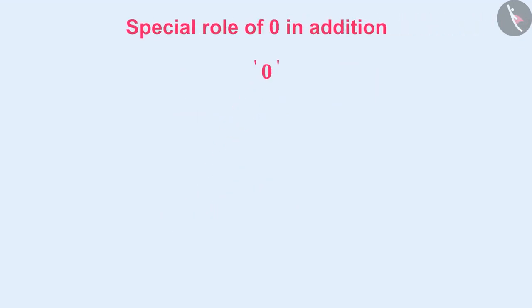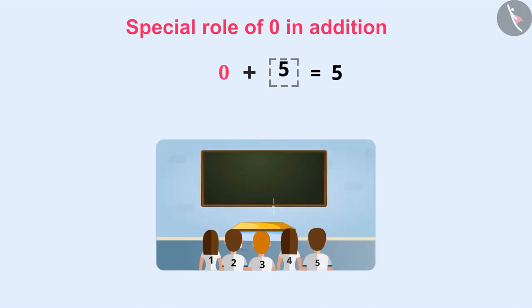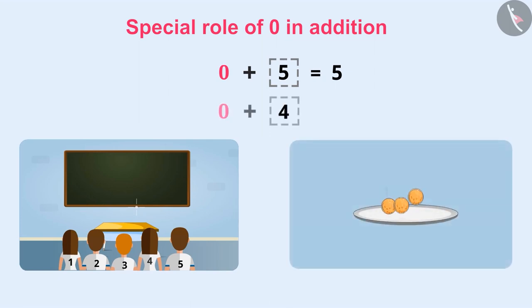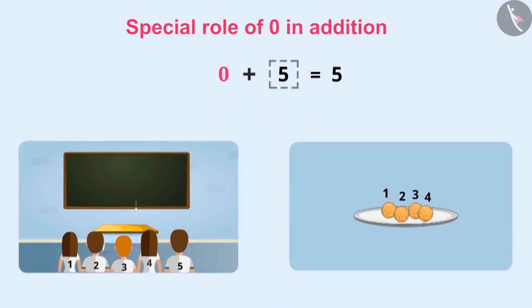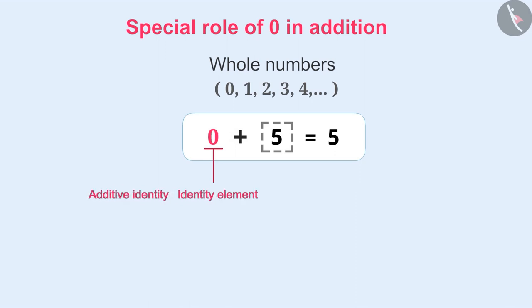0 has a special role in addition. If any number is added to 0 — for example, if 5 students enter an empty class, or if we put 4 laddoos in an empty plate — the result will be the same whole number which is added to 0. Because of this reason, 0 is called an identity for the addition of whole numbers, or the additive identity — also called an identity element or simply identity.